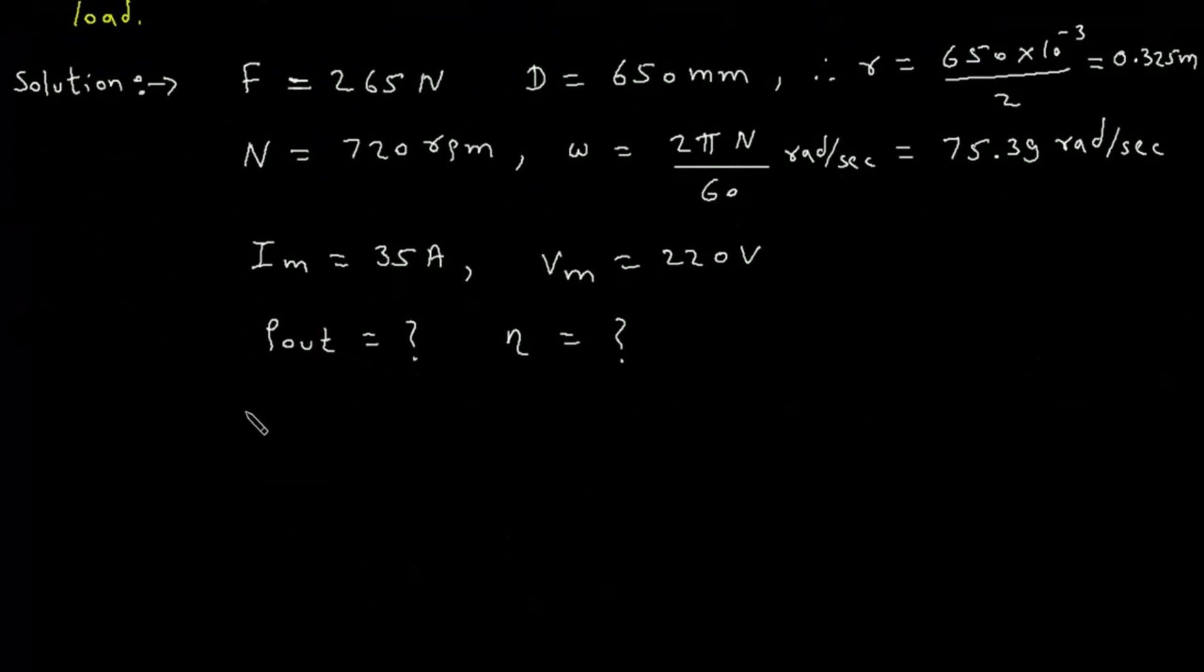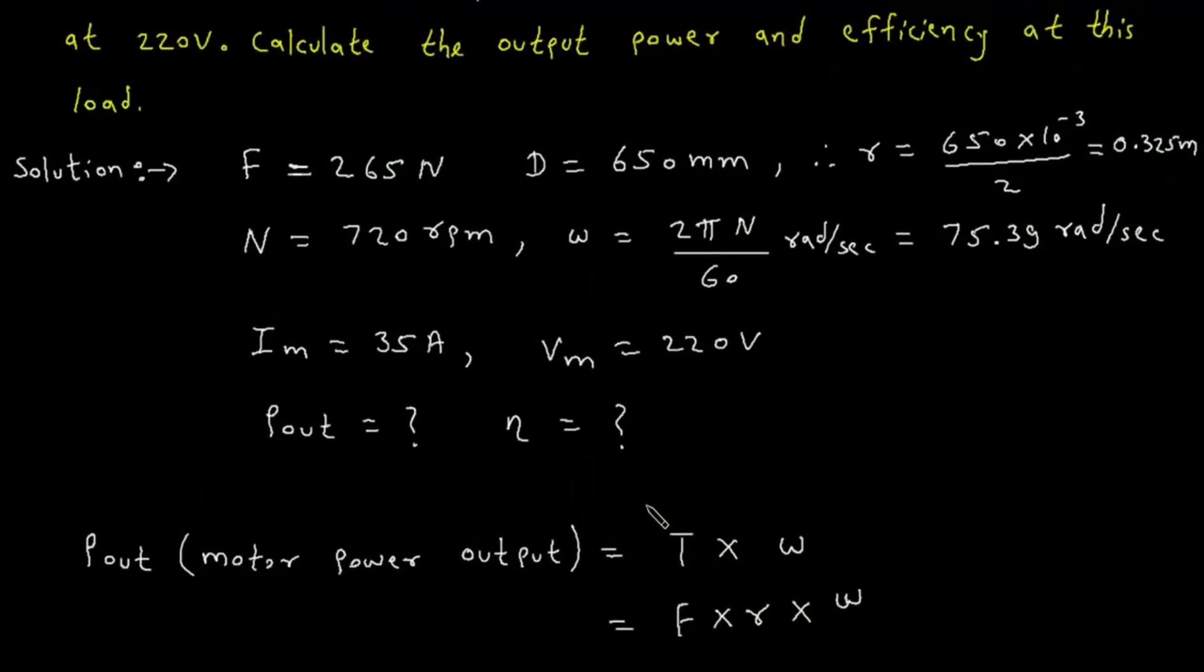The formula for Pout, or motor power output, equals torque times angular speed.